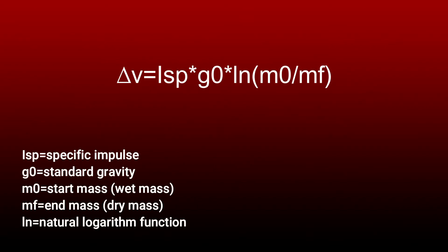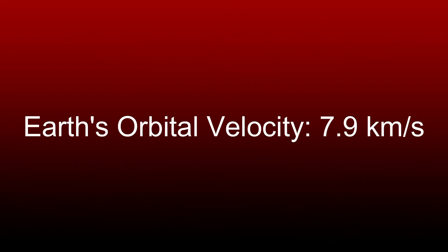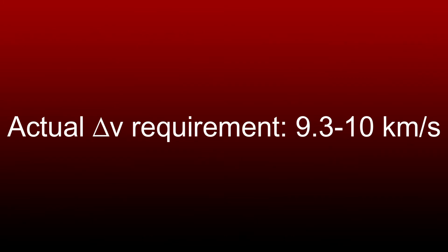Delta V is calculated by an equation known as the rocket equation, which has multiple versions. But the one I think is most simple is this: specific impulse of the engine, multiplied by the standard gravity of the body you're orbiting or launching from, multiplied by the natural logarithm of the wet mass divided by the dry mass of the rocket. You may notice that this equation doesn't take into account air resistance. This means that despite Earth's orbital velocity of around 7.9 kilometers per second, it takes around 9.3 to 10 kilometers per second of delta V to make it into lower Earth orbit.